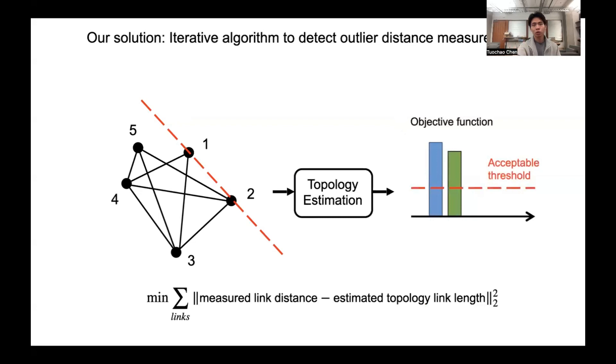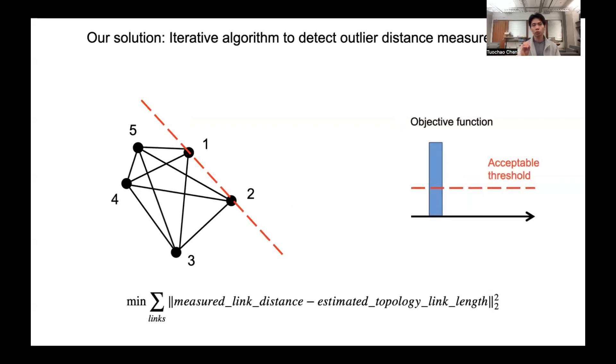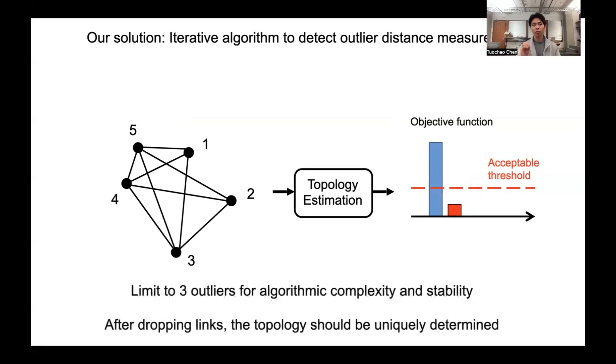If we next drop the link between 1 and 2 and then recompute the topology, the objective function will be drastically dropped. This is what we use to detect the outliers. We note that we limit the number of outliers to 3 for algorithm complexity and stability.